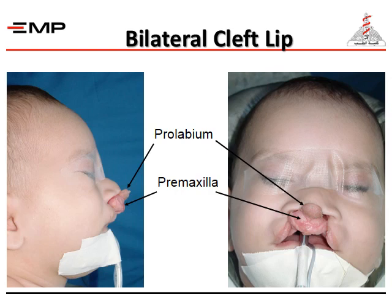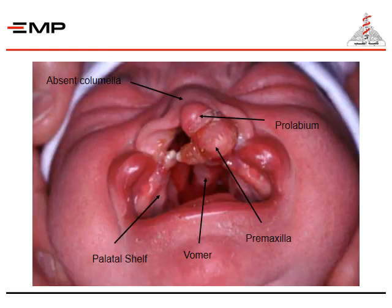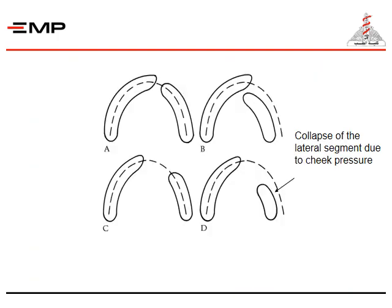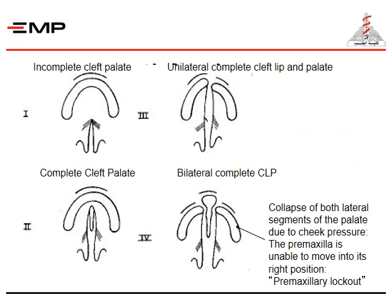In cases of bilateral cleft lip, the prolabium is extruded along with the premaxilla. We have absent columella, palatal shelf, vomer bone, premaxilla, and prolabium. There is collapse of the lateral segments due to cheek pressure. In bilateral complete cleft lip and palate, both lateral segments of the palate collapse due to cheek pressure; the premaxilla is unable to move into its correct position — what's called premaxillary lockout.